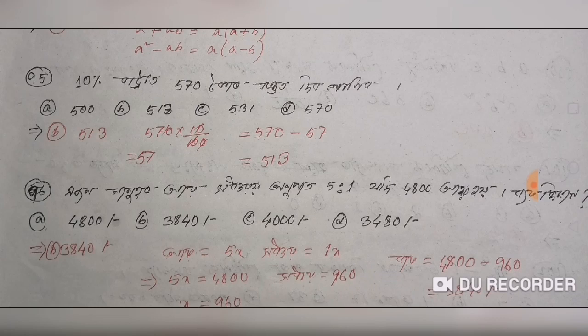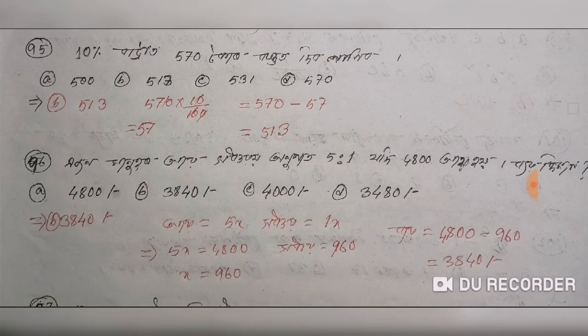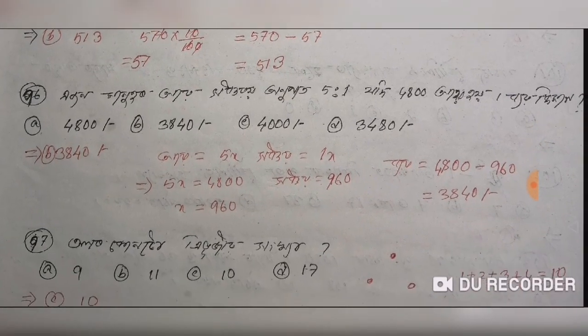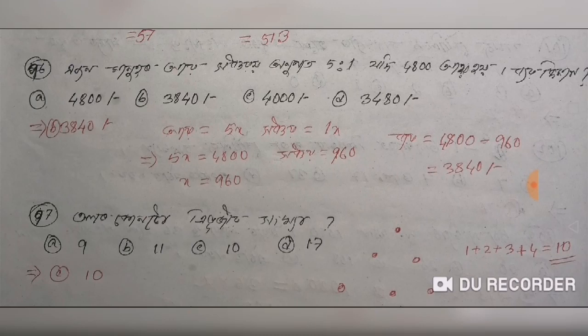That is the number of players class, and those are the number of players class. You can see the space is divided by 5 to 1. If you have the space from the space, you can see the space is half the space.